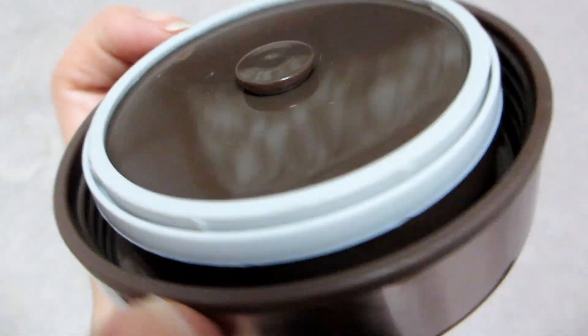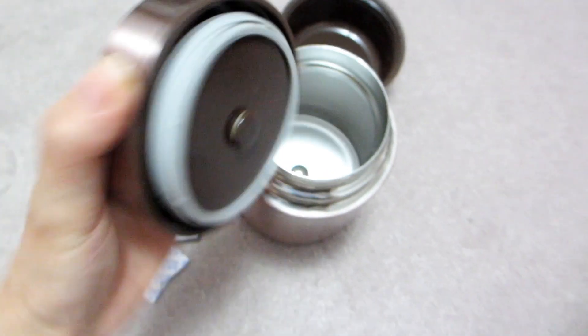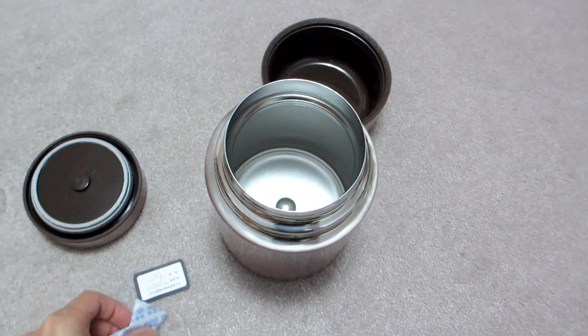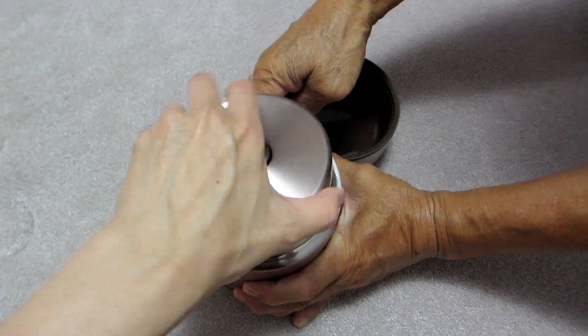The second lid also keeps everything airtight and leak proof, and on the top of it you even have an air pressure release button which is so unique compared to other similar thermos containers.